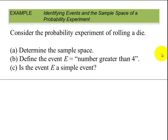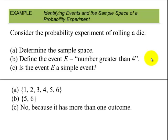Let's look at this example. Consider the probability experiment of rolling a die. Determine the sample space. Define the event E: a number greater than 4. And is the event E a simple event? Let's look at that. Part A: Sample space would be the numbers 1 through 6. There are 6 faces on the die and they are numbered 1 through 6. Part B: Number greater than 4 would be 5 and 6. And as we can see this is not a simple event because it has more than one outcome.